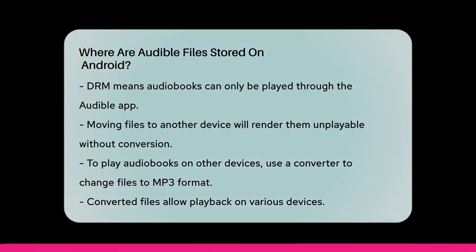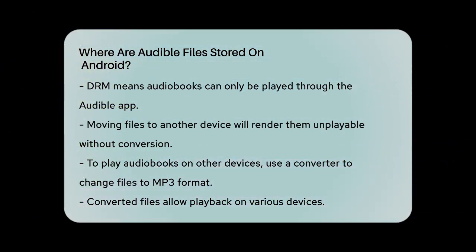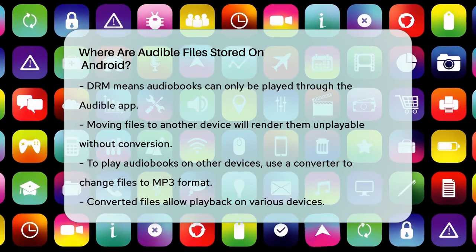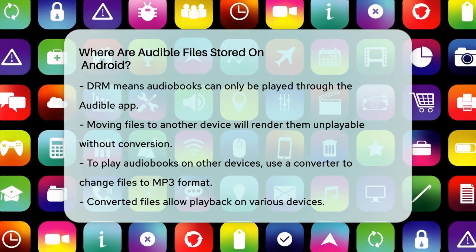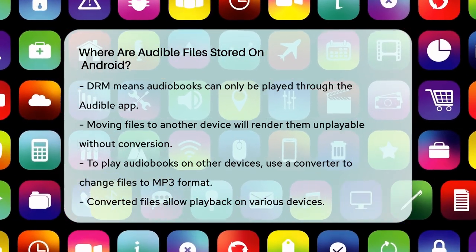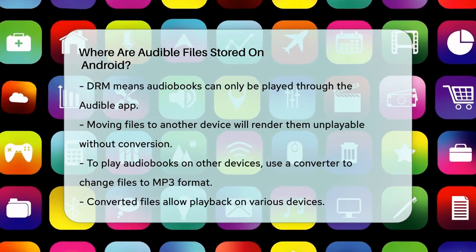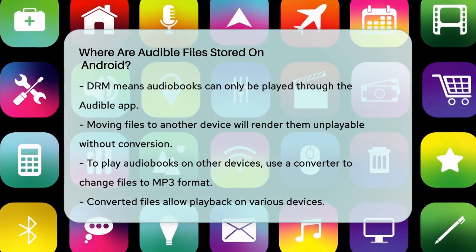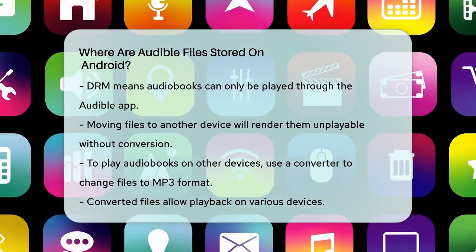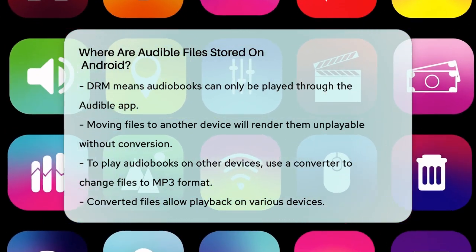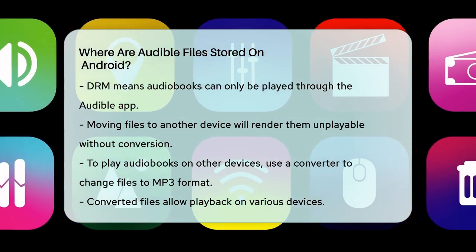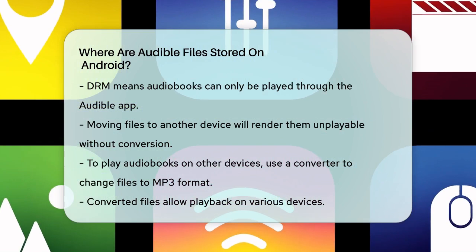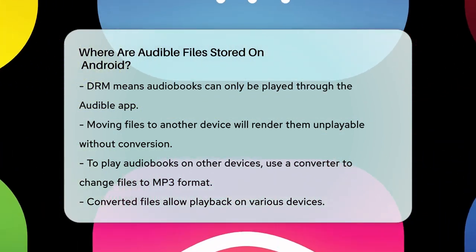So, to recap, your Audible files on Android are stored in the Exocache folder within the com.audible.application directory, but they require the Audible app to be played, or you need to convert them to a different format for broader compatibility.